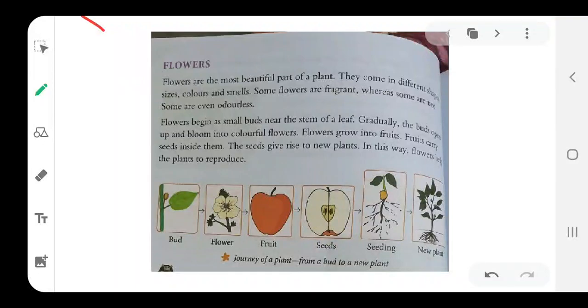Hello everyone, this is your EVS teacher from Mount Littra Z School Rampura. Today from chapter 7, we are going to start the topics about flowers. What are flowers? Flowers are the part of the plant, which are of different colors, different sizes, different smells. They are very good in smell, very fragrant.